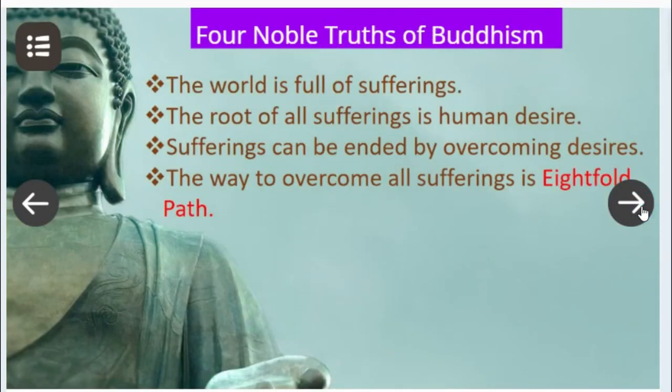Mahatma Buddha taught us four noble truths. These are the essence of Buddha's teachings. The four noble truths are: the world is full of sufferings; the cause of suffering is human desire; sufferings can be ended by overcoming desires; and the way to overcome sufferings is the Eightfold Path.